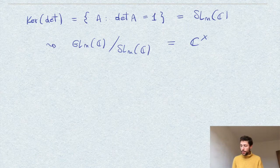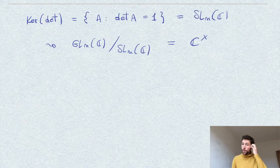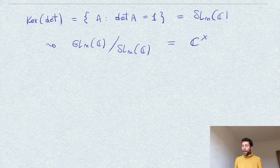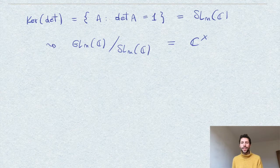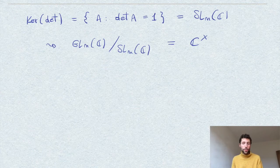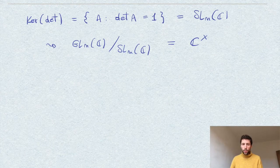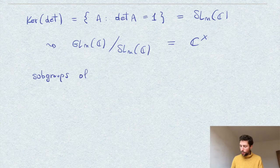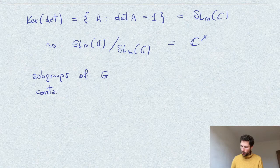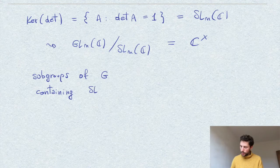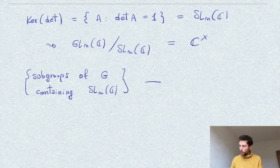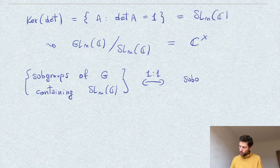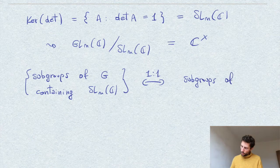So now we want to attack our problem and determine what we can say about normal subgroups of GL_n. And to do this, I recall the correspondence that we have discussed in the video about what I call the third isomorphism theorem of groups, where we observe that in such a situation we have a correspondence, a bijective correspondence between the subgroups of our group G containing in this case SL_n(C), and this is in one-to-one correspondence with the subgroups of the image of this map, so in this case C star.